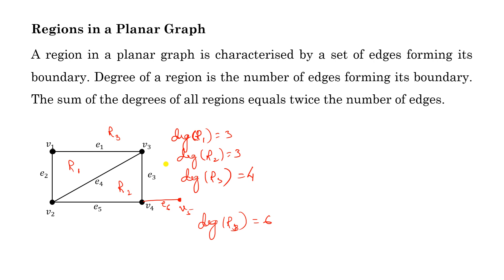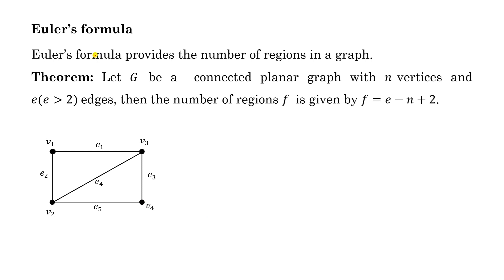In general, pendant vertices, self-loops, and parallel edges have no meaning in checking the planarity of a graph, because all these things increase the number of edges or regions. So for checking the planarity of a graph, we can remove pendant vertices, self-loops, and parallel edges — we have to make the graph simple, as these things do not affect the planarity of the graph.